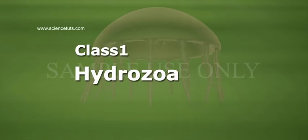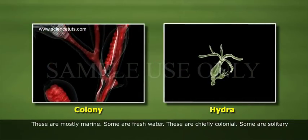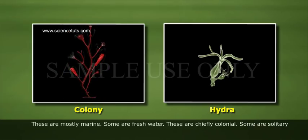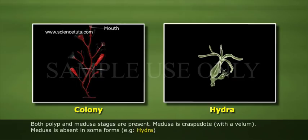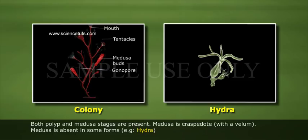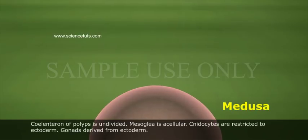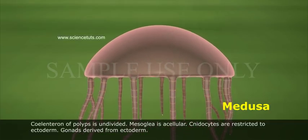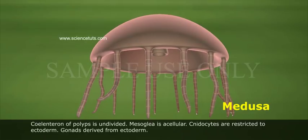Class 1: Hydrozoa. These are mostly marine, some are freshwater. These are chiefly colonial, some are solitary. Example: Hydra. Both Polyp and Medusa stages are present. Medusa is Craspedote with Velum. Medusa is absent in some forms, example Hydra. Coelenteron of Polyps is undivided. Mesoglia is acellular. Cnidocytes are restricted to ectoderm.